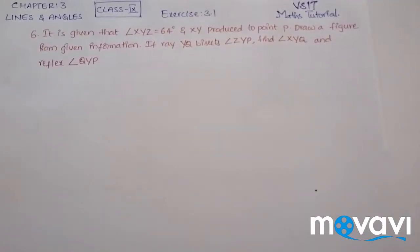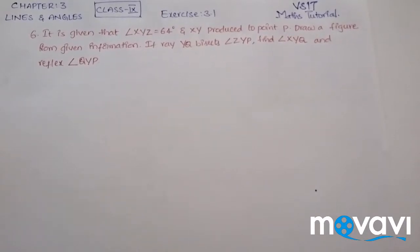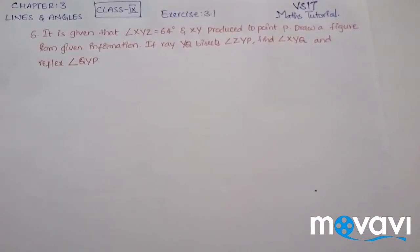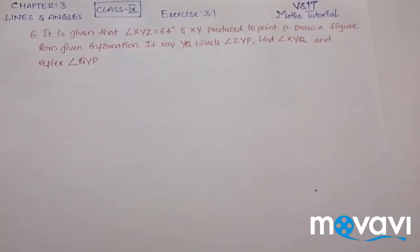This is the sixth question of Exercise 3.1 of Lines and Angles of Class 9. The question given here is: it is given that Angle XYZ is equal to 64 degrees and XY is produced to point P. Draw a figure from the given information.